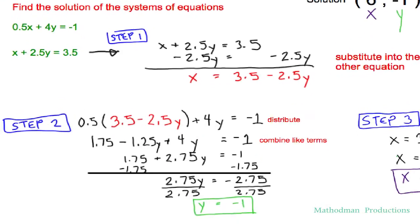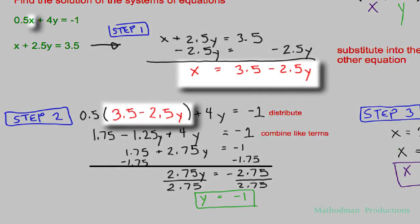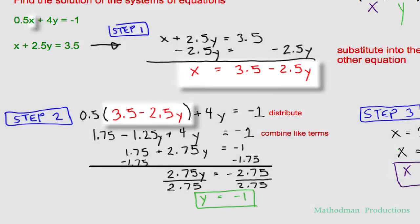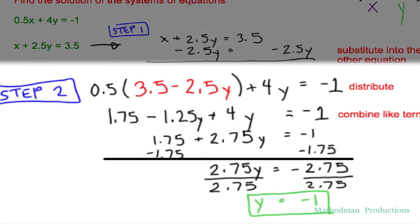Now that you have x solved for, you're going to substitute that into the other equation. So instead of x, we plug in that value in terms of y. And now in step 2, they're all in terms of y. We can distribute, combine like terms. And solve for y. You get y equals negative 1.